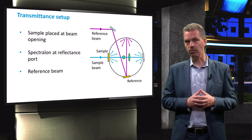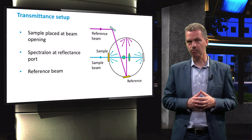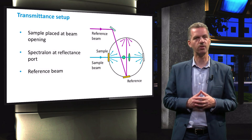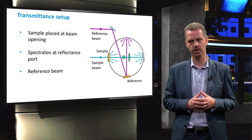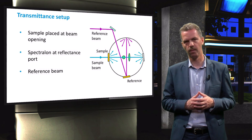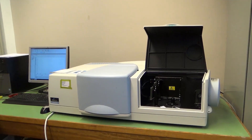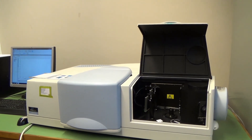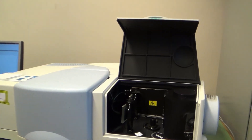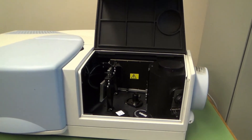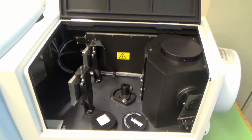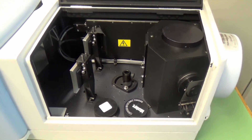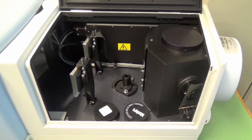We will now show the measurement procedure on a spectrometer system to determine the total reflectance of a crystalline silicon solar cell. Here we see an overview of the spectrometer with the light paths of the sample beam and the reference beam on the left, and the integrating sphere as a black box on the right.